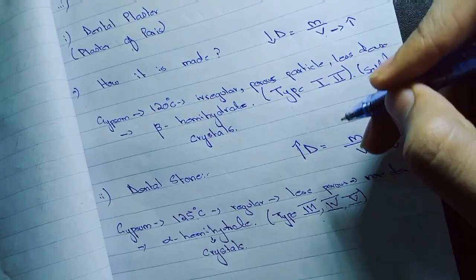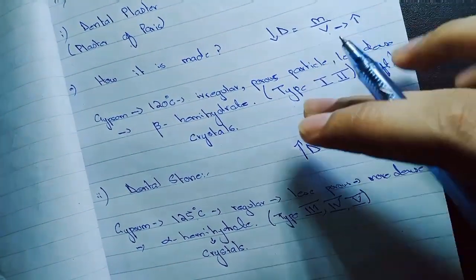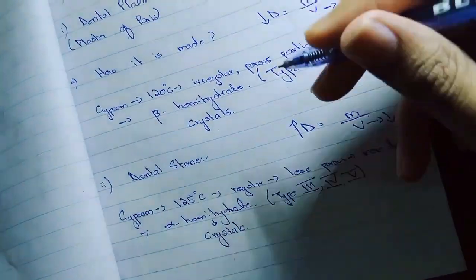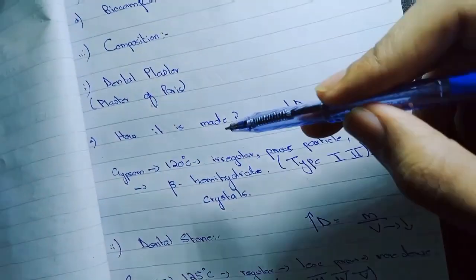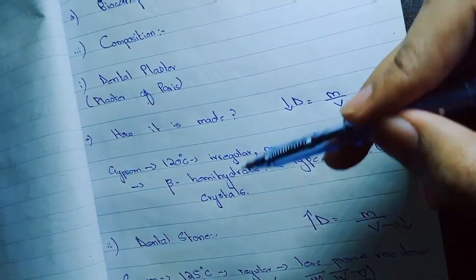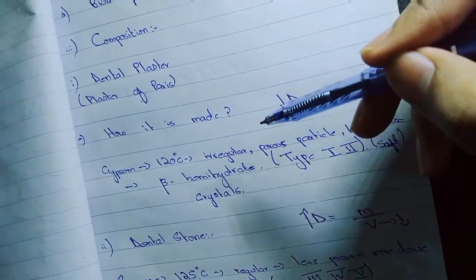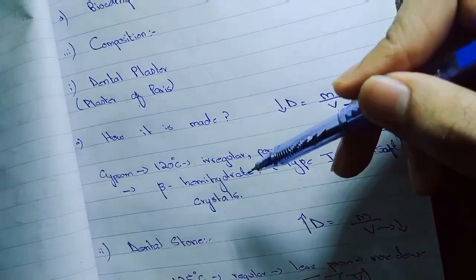One more thing I like to mention here that the manufacturers add certain color dyes to distinguish between the dental plaster and dental stone. The colors might be yellowish, pale yellowish and blue or pink in color. So I hope this video helps you guys in your studies.